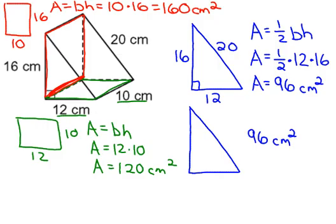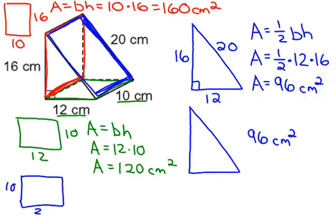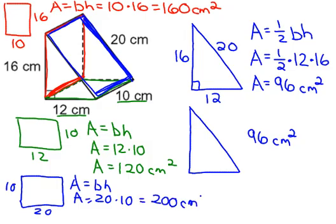And then we have one more rectangle. It kind of would be the top the way you're looking at it. So look where I'm outlining in blue. That rectangle I'm going to draw down at the bottom here. It has a dimension of 20 on this side and 10 on the other side. So again, base times height: 20 times 10, and that would be 200 square centimeters.